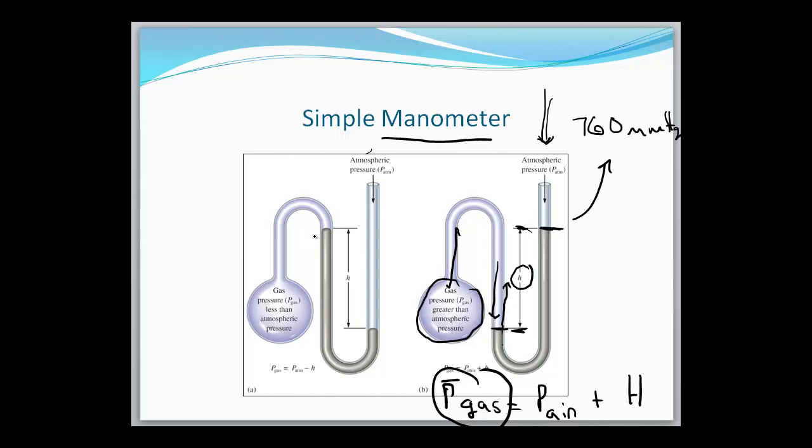On the other side here, you see that the gas pressure pushing against the column is less than atmospheric pressure. In other words, atmospheric pressure is able to push down on that column and push it back towards the gas. So here, the pressure of the gas is equal to the pressure of the atmosphere minus the height of the column.